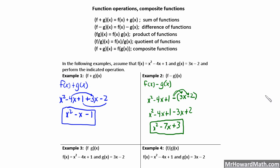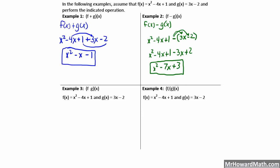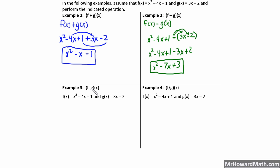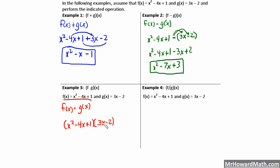These are pretty simple — I don't think you'll have any trouble with these. Next we have f times g of x, so we're going to take f of x and multiply it by g of x. We take x squared minus 4x plus 1 — that's our f of x — and multiply by our g of x function, 3x minus 2. We FOIL this out: 3x times x squared gives us 3x cubed. Then 3x times negative 4x is negative 12x squared, and 3x times 1 is plus 3x.